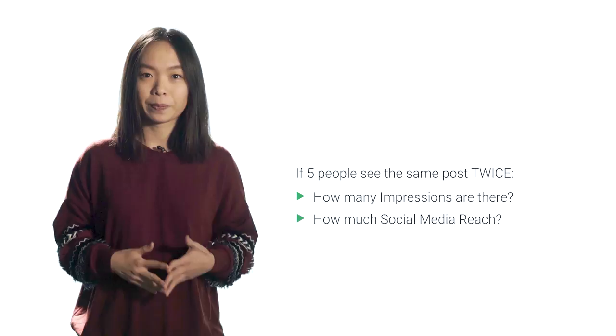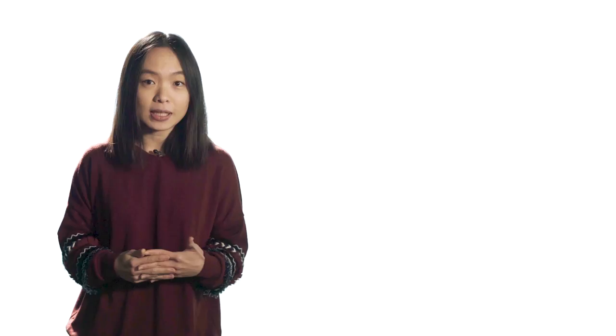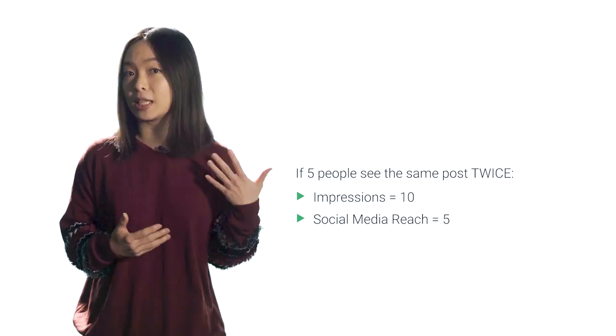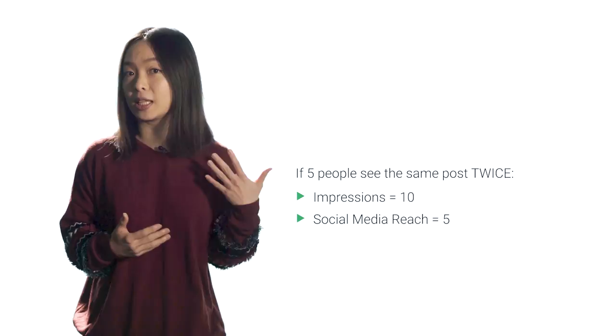Okay, so if five people see the same post twice, that means it had 10 impressions and a five of Social Media Reach. Remember, the post may have been shown 10 times, but that was to the same five people. So how'd you do? That wasn't so bad, right?